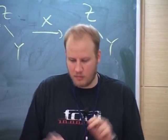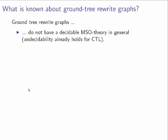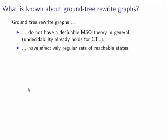The intuition is that even with a CTL formula you can express the run of a two-counter machine — you have two branches, and with a CTL formula you can express that those two branches communicate.